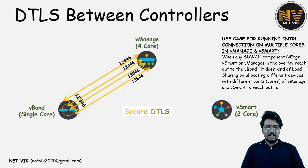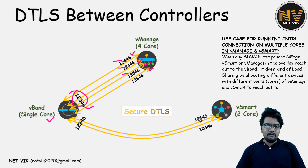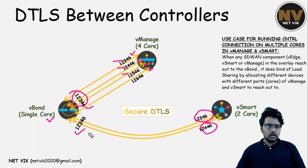Now, at first, vManage initiates from all its cores to vBond. From each of the cores available, the vManage has initiated a connection to the vBond's single core. So vBond is always going to listen on ports 1, 2, 3, 4, 6, whereas vManage has started initiating control connections from each of its cores — in our case, four. Same way, when vSmart is brought up and initiates a connection to the vBond, you notice it is initiating from both of its cores towards the vBond's single core.